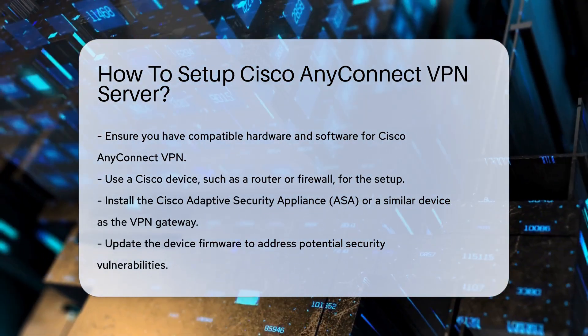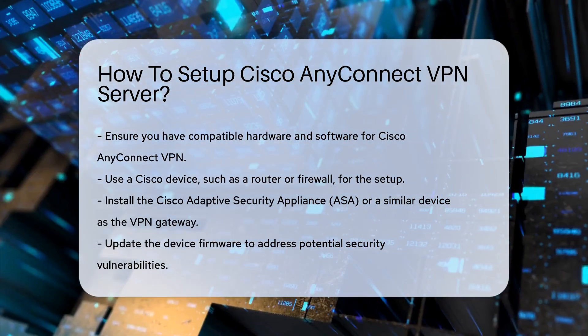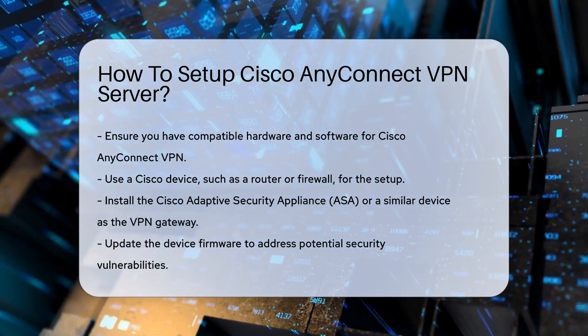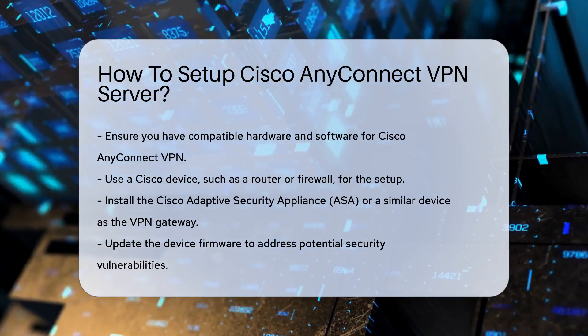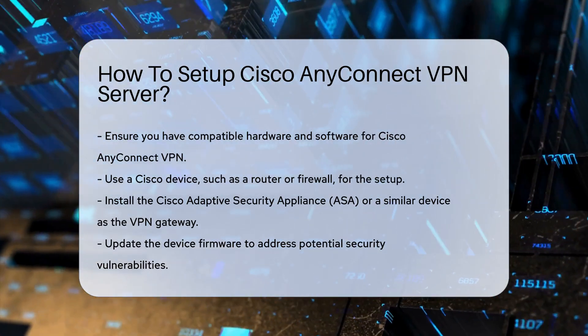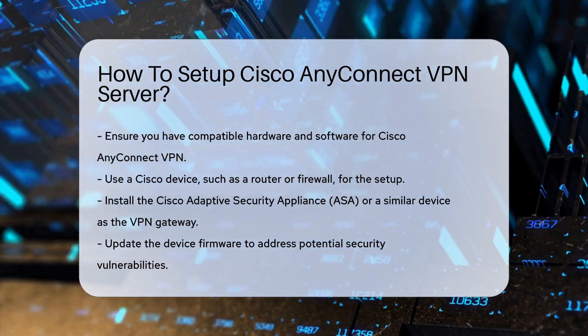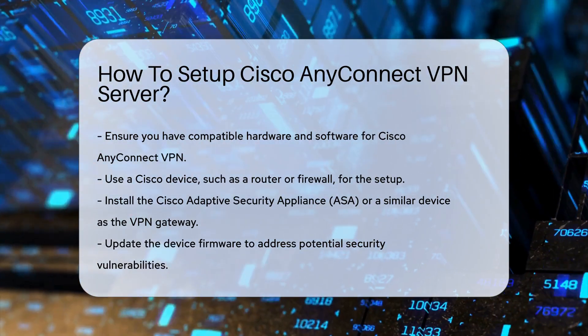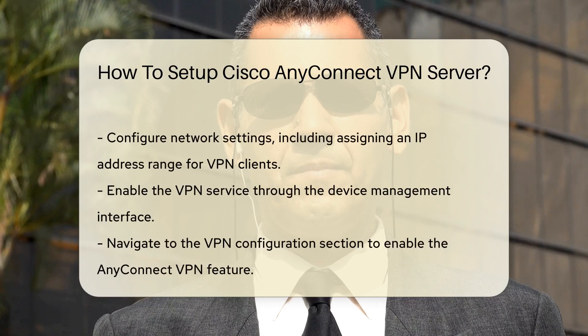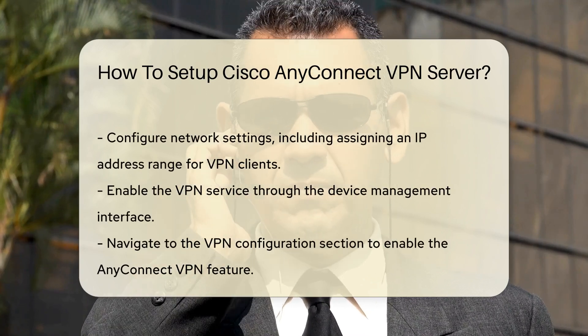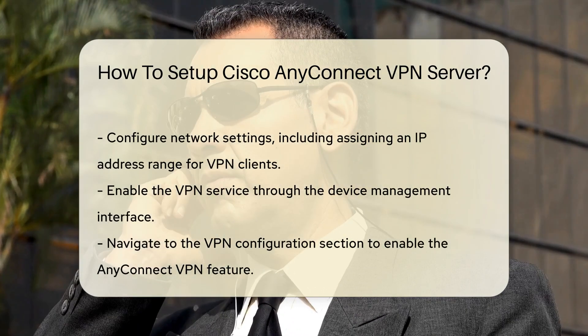Next, install the Cisco Adaptive Security Appliance or a similar device. This will serve as the VPN gateway. Ensure that the device is updated with the latest firmware. This helps in addressing security vulnerabilities.